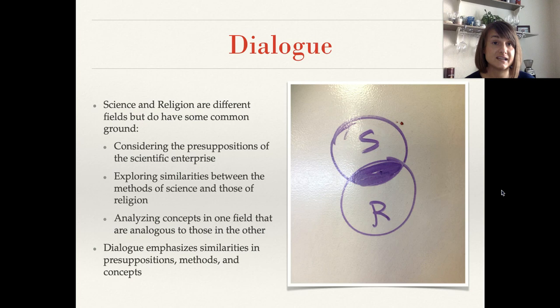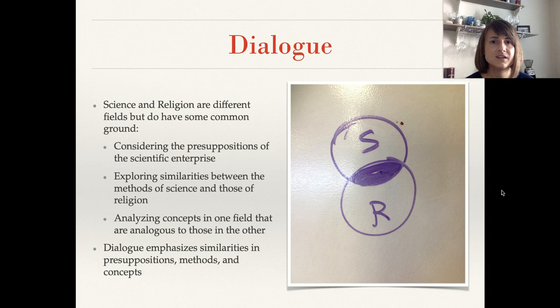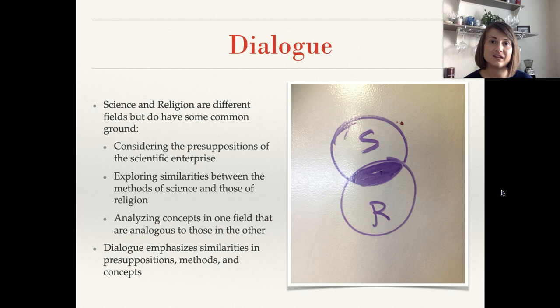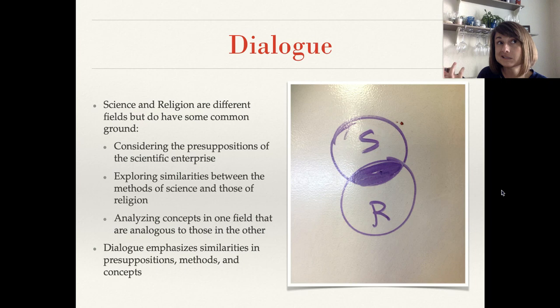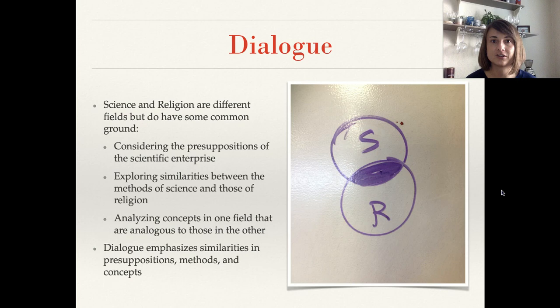Some things they have in common might include considering the presuppositions of the scientific enterprise — remember those four things that all scientists have to take for granted for science to work — and exploring similarities between the methods of science and those of religion. We talked about how while their methods are different, they both rely on reason and the collection of evidence. Also, analyzing concepts in one field that are analogous to those in the other: for example, the idea of Jesus resurrecting from the dead is an impressive, almost impossible idea because of what we know about biology, so maybe there's something we can learn about resurrection by having these two fields in conversation.